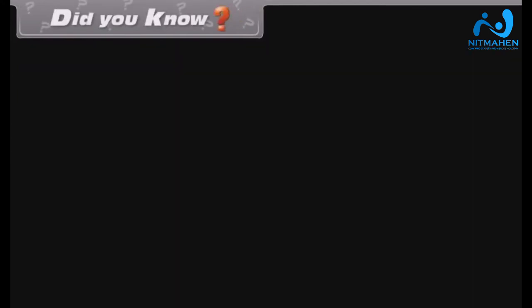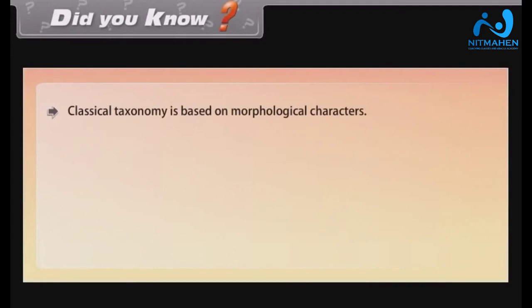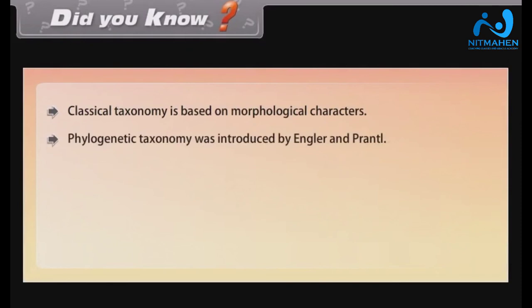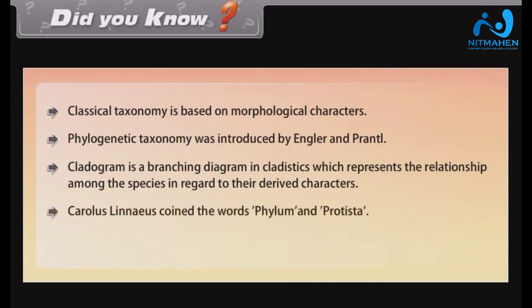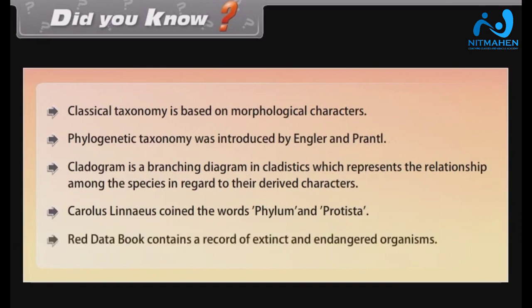Did you know? Classical taxonomy is based on morphological characters. Phylogenetic taxonomy was introduced by Engler and Prantl. A cladogram is a branching diagram in cladistics that represents the relationship among species with regard to their derived characters. Carolus Linnaeus coined the words 'Phylum' and 'Protista.' The Red Data Book contains a record of extinct and endangered organisms.